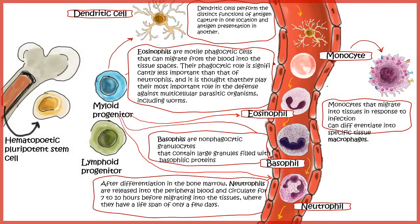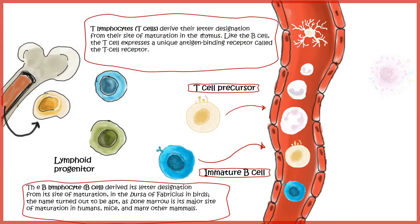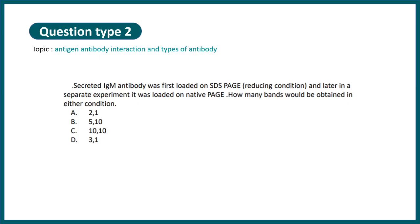By the way, in an academy I have detailed flashcards which would really help your learning process. These flashcards help you recall and understand these topics in a very short span of time. Question type 2 is from antigen-antibody interaction and types of antibodies.